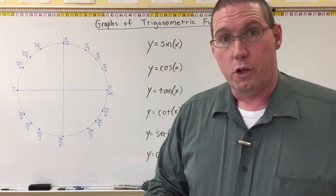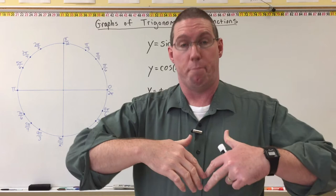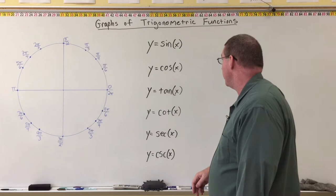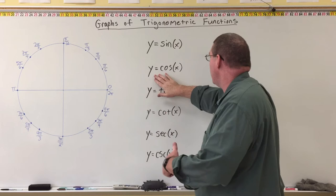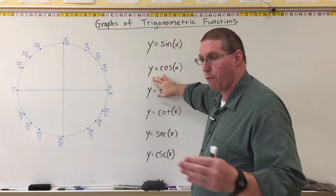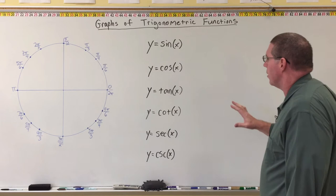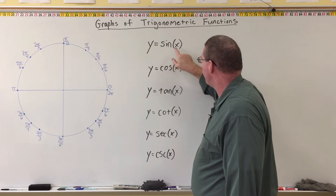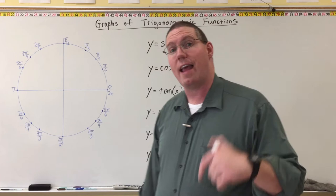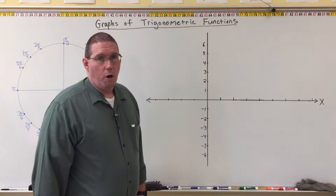Anytime you have one equation with two variables, you have a relation — you don't have one solution. You have potentially an infinite number of solutions to that equation. And when certain circumstances are met — the requirements for a function — it has to pass the vertical line test. So what we're dealing with here is we understand functions as a relationship between x and y, and every function has a unique graph that goes along with it.